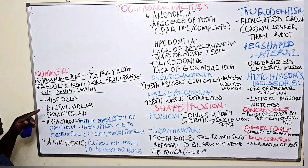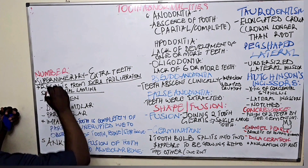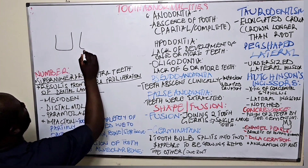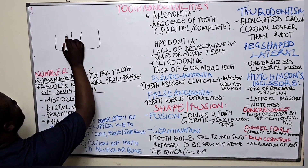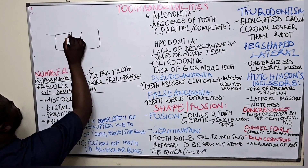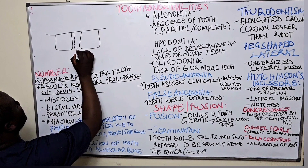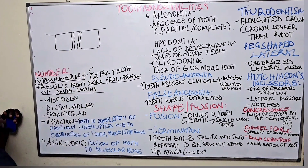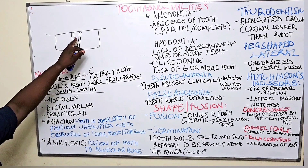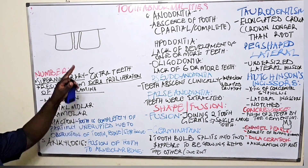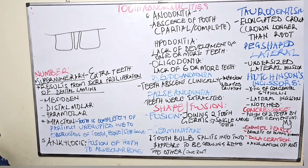An example of a supernumerary tooth is the mesiodens. When we have our central incisors, a mesiodens is an extra tooth found in the middle, in between the upper central incisors.